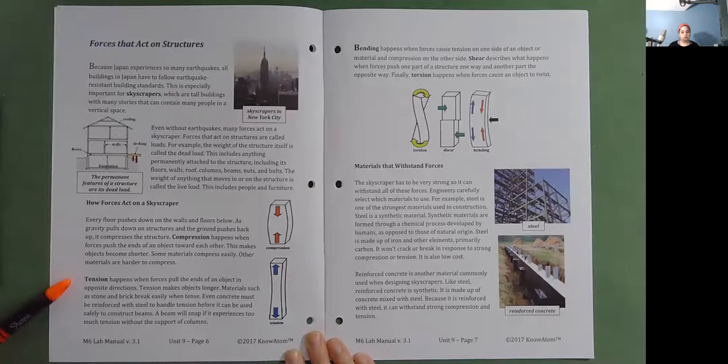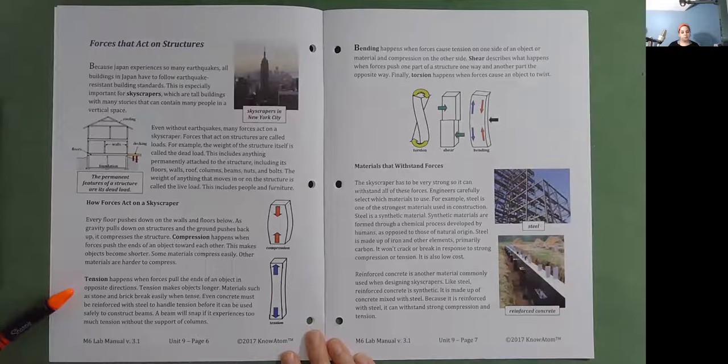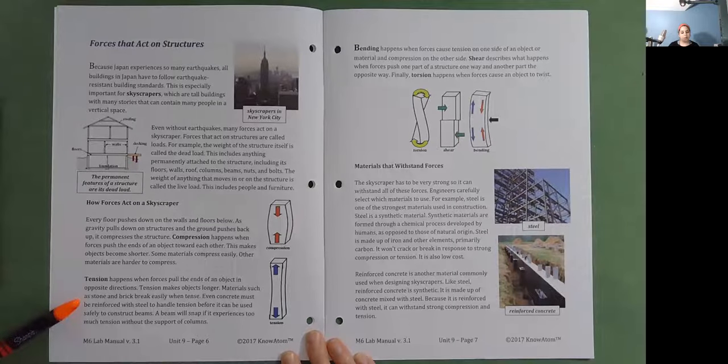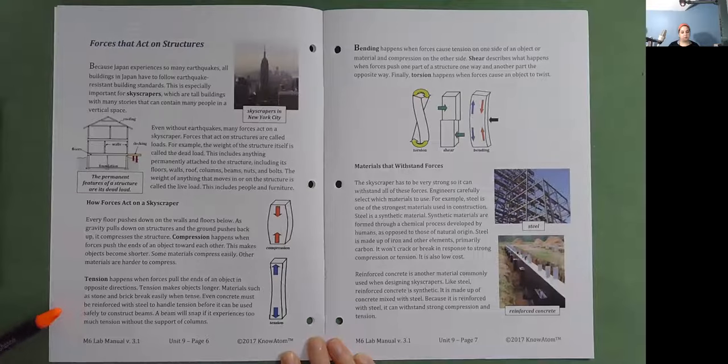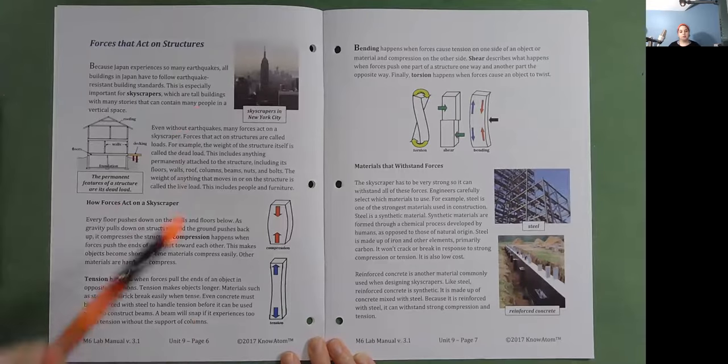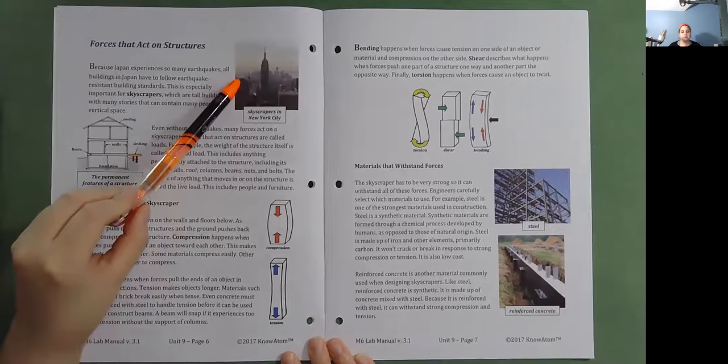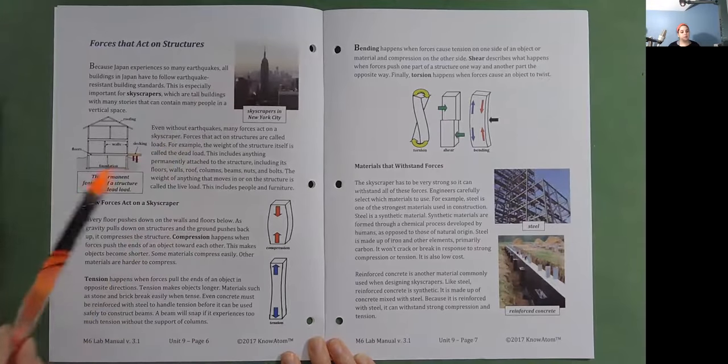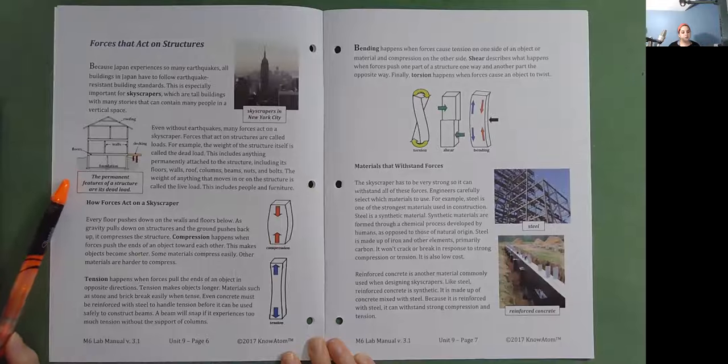Tension happens when forces pull the ends of an object in opposite directions. Tension makes an object longer. Materials such as stone and brick break easily when tense. Even concrete must be reinforced with steel to handle tension before it can be used safely to construct beams. A beam will snap if it experiences too much tension without the support of columns. So here's a picture of skyscrapers in New York City. The permanent features of a structure are its dead load.